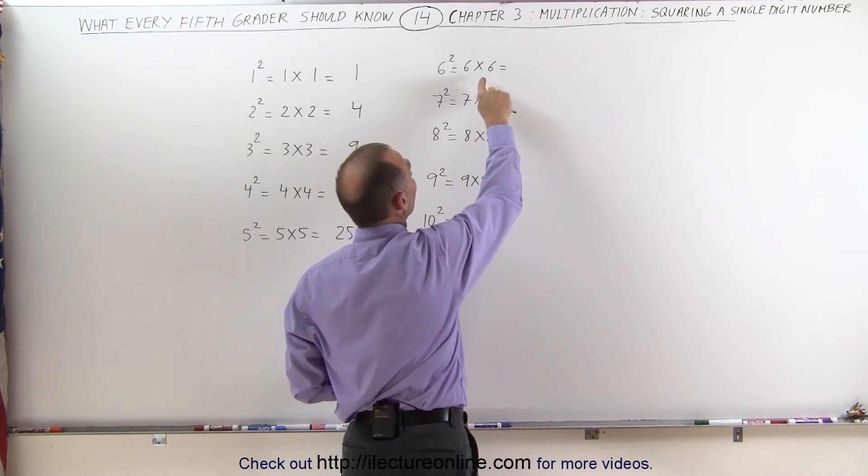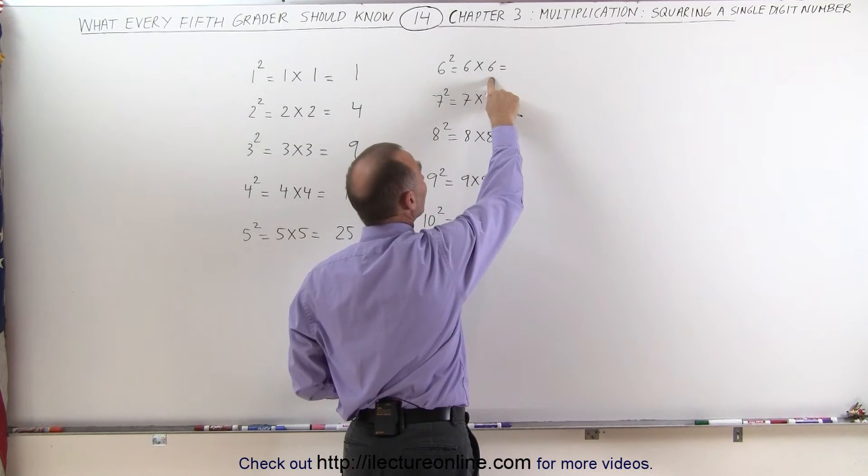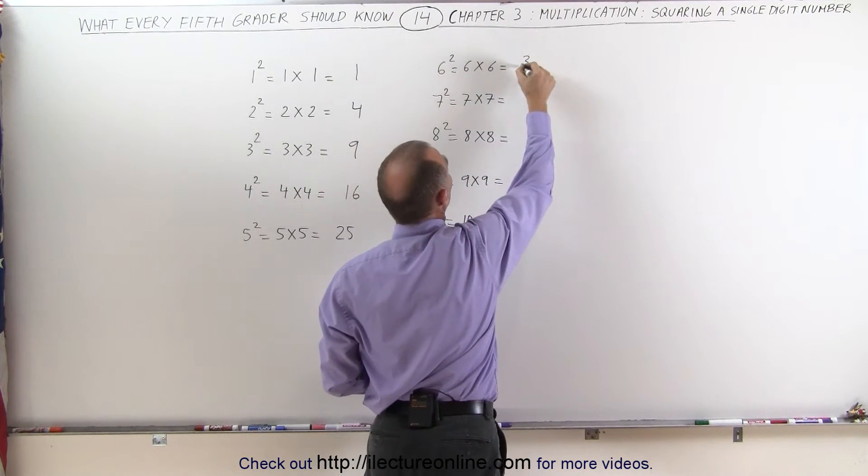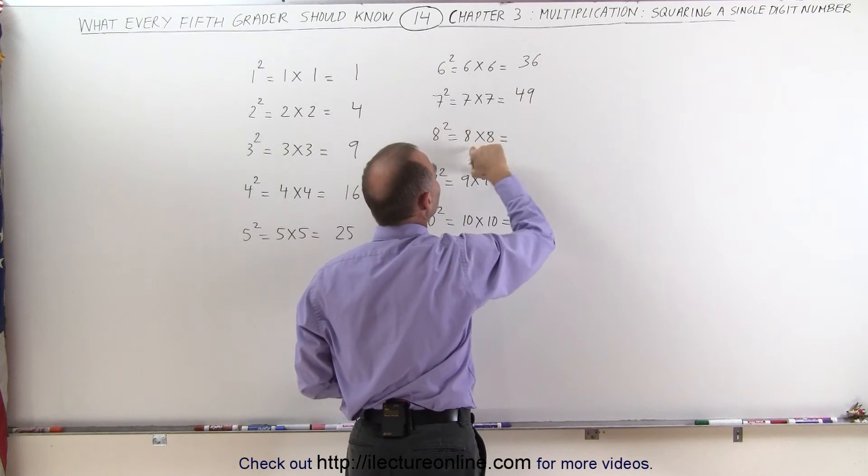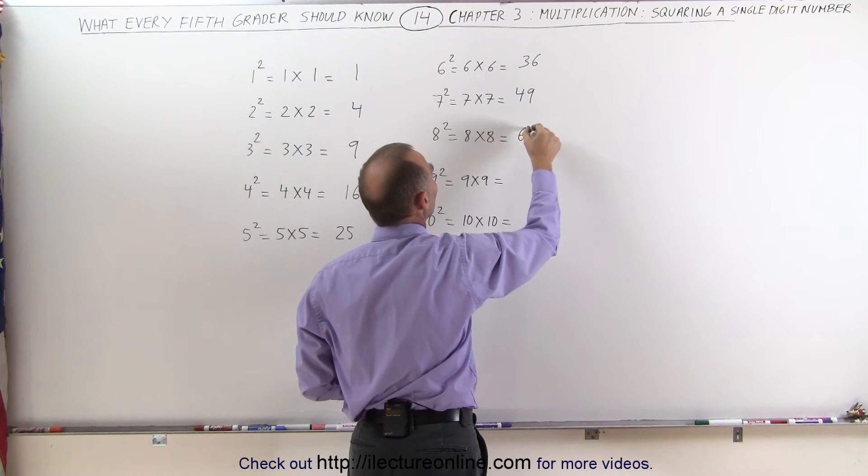6 times 6 is 6 times 5, which is 30, plus 6, which is 36. 7 times 7 is 50 minus 1, which is 49. 8 times 8 is 64.